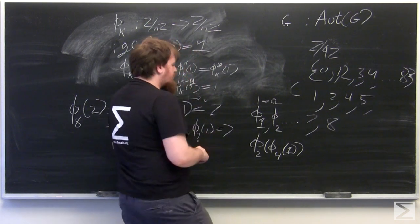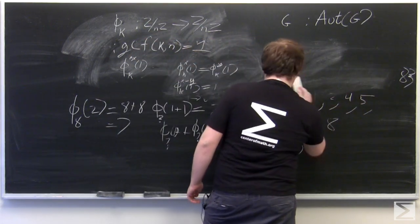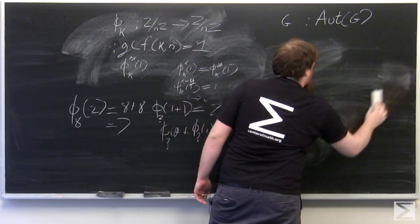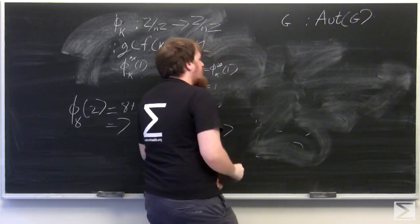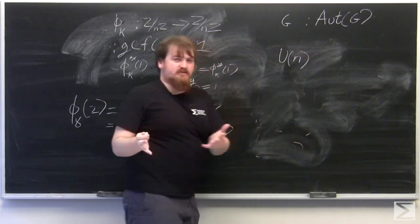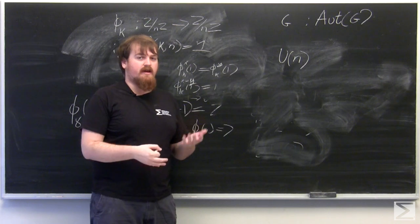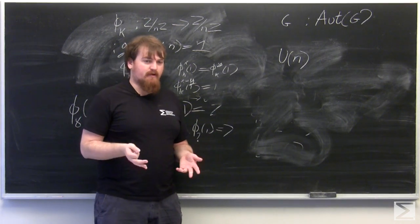So the group under multiplication modulo N of elements less than N is called U of N for group of units. And a unit is just something that has a multiplicative inverse under a multiplication-like operation.